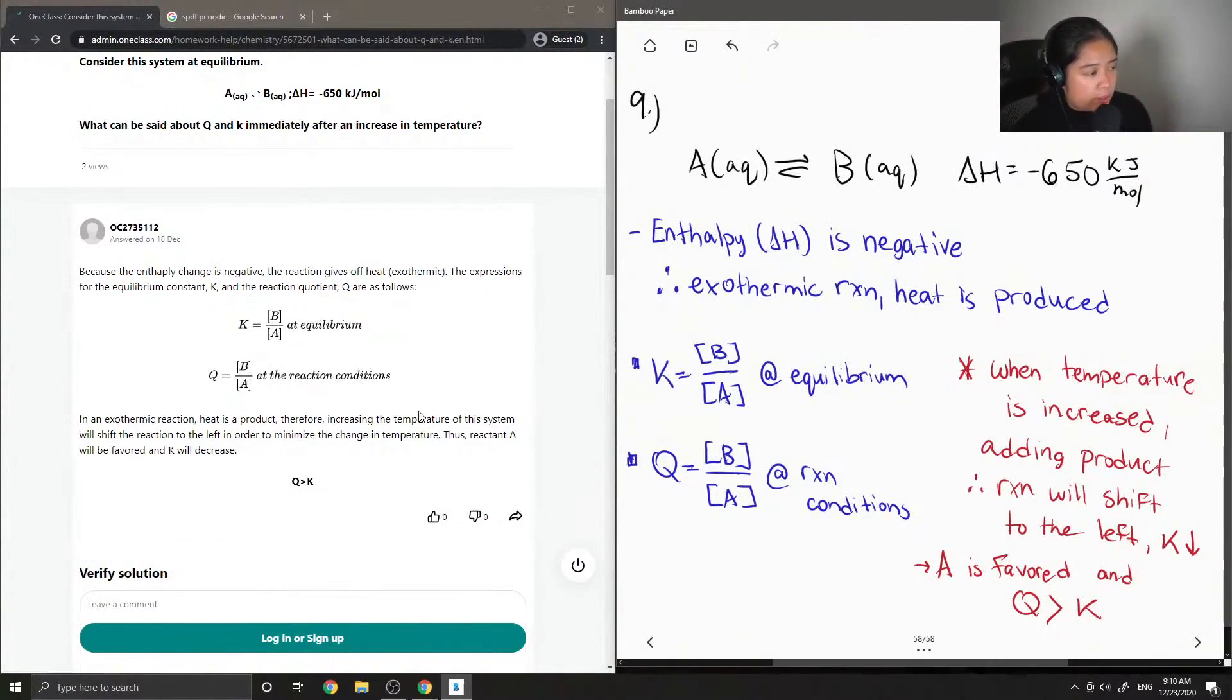So let's see what the tutor said. Because the enthalpy change is negative, the reaction gives off heat, and it's exothermic. The expressions for the equilibrium constant and the reaction quotient Q are as follows: B over A, either at equilibrium or at reaction conditions.